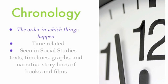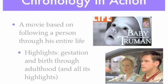Chronology is the order in which things happen. It's time-related and is sometimes called time order. You see it in social studies texts, timelines, graphs, and narrative storylines from both films and books. In the trailer from The Truman Show you don't see every element, but the example of the movie is following one man's life from birth straight through. And the movie does go chronologically.